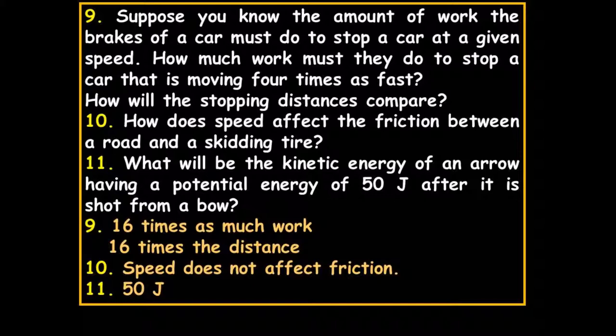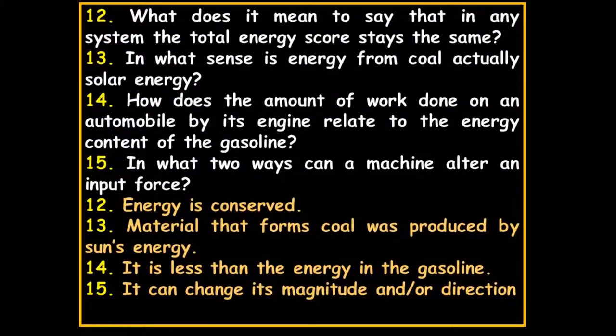How does speed affect friction between a road and a tire? Speed does not affect friction — friction is based on the normal force. What will be the kinetic energy of an arrow having a potential energy of 50 joules after it is shot? It'll be 50 joules — you're pulling the string back and giving it kinetic energy translated from potential energy.